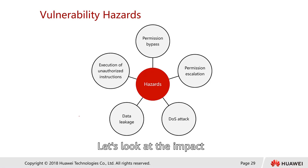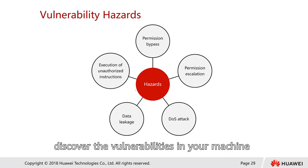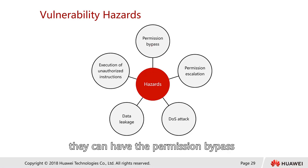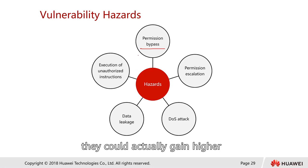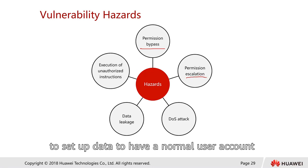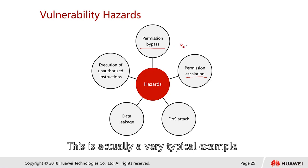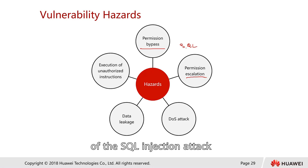Let's look at the impact. When a hacker discovers vulnerabilities in your machine, they can perform a permission bypass — they can escalate their own permissions. Instead of having a normal user account, they could gain root or administrator access. This is a very typical example of a SQL injection attack, after which they can gain higher access.